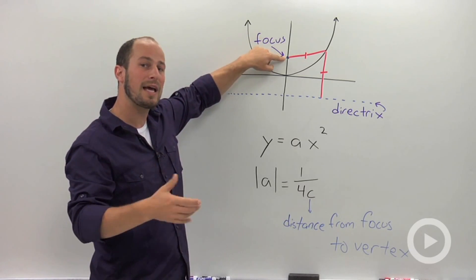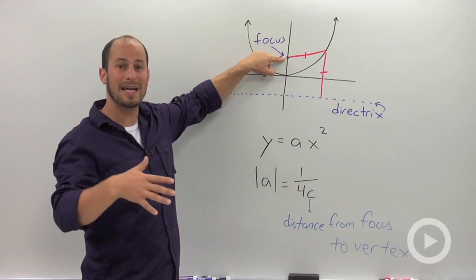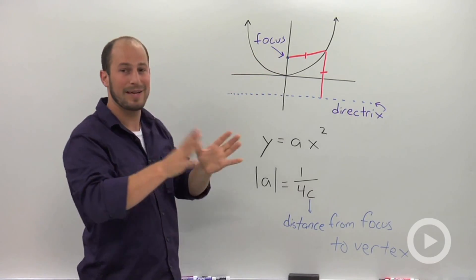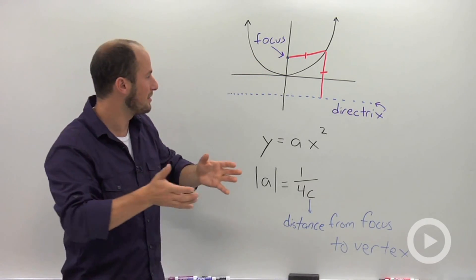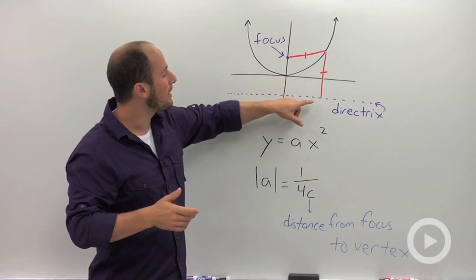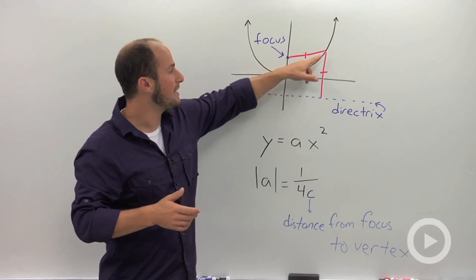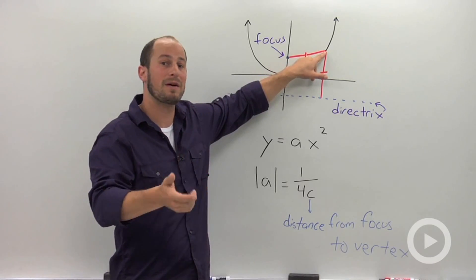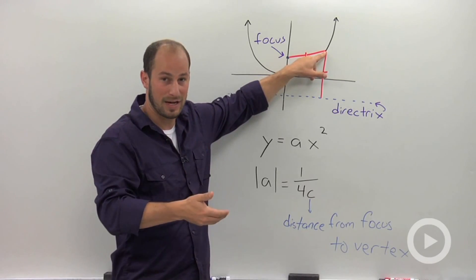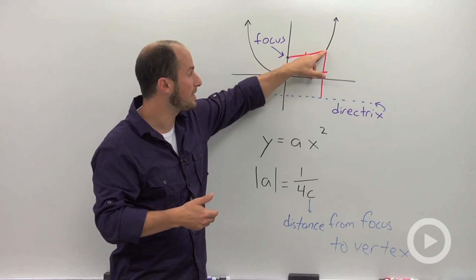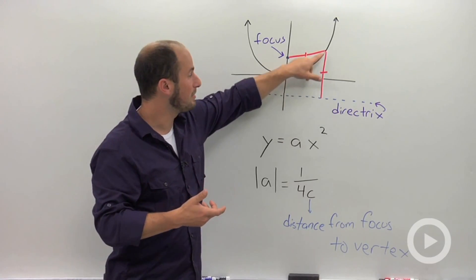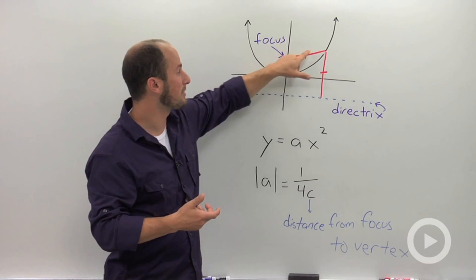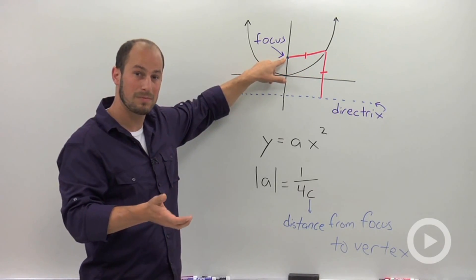And then what the directrix is is not quite as applicable because it's not actually in this little parabolic sound-collecting thing. But what it is, it's a line so that any point on the parabola is going to be equidistant from the focus and that directrix. So if you were to draw a line straight down to the directrix, that line is going to be exactly the same distance if you drew it straight to the focus.